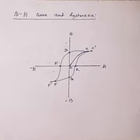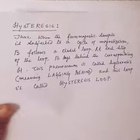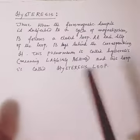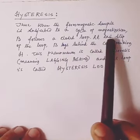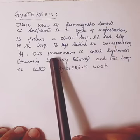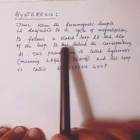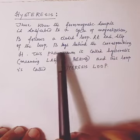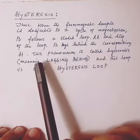So you can see that when the ferromagnetic sample is subjected to a cycle of magnetization, B follows a closed loop and at each step of the loop B lags behind the corresponding H.